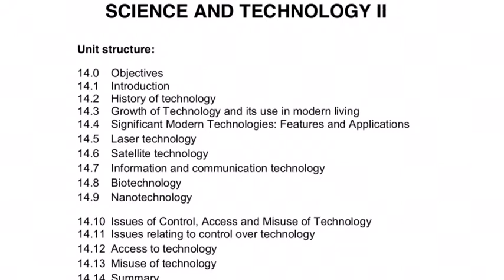Proto-historic Period. In around 9000 BC, man started practicing agriculture and domestication of animals on a large scale. One of the most important technological developments of this period is the technology of extracting metals from their ores through smelting. Numerous tools of copper are found belonging to this period. The technology was taken one step further with the knowledge of producing alloy. Bronze tools have been found in several places. Stone tools continue to be used. Evidence of well-planned houses and canals shows man's knowledge of architecture.